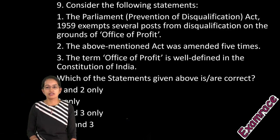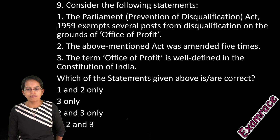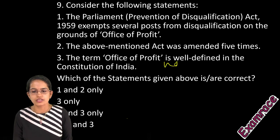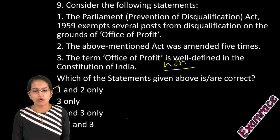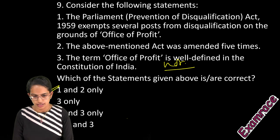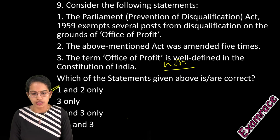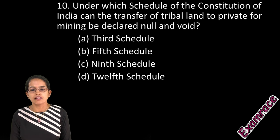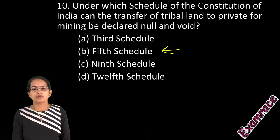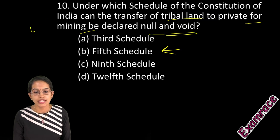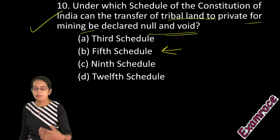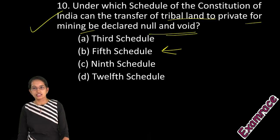The next question concerns the office of profit, which is not well defined in the Constitution. Since it is not well defined, only the first option is correct. The Fifth Schedule states that the transfer of tribal land to private mining can be declared null and void — a very important point from a recent edition of The Hindu.